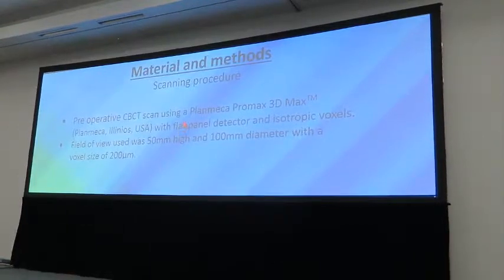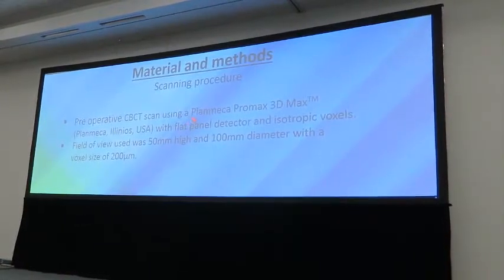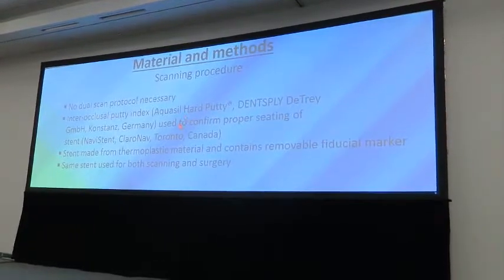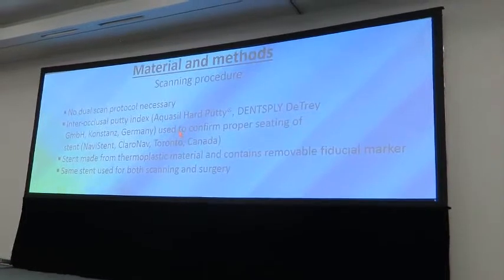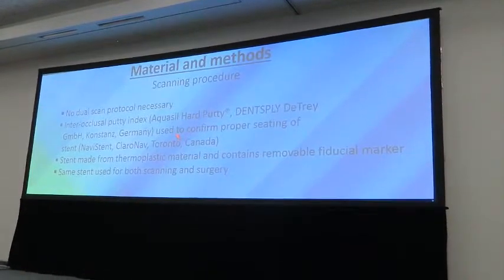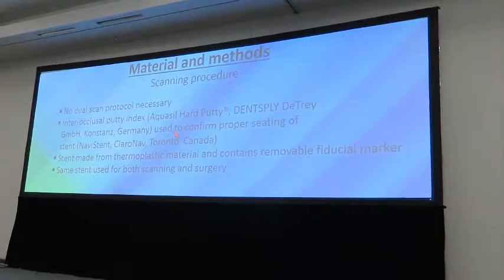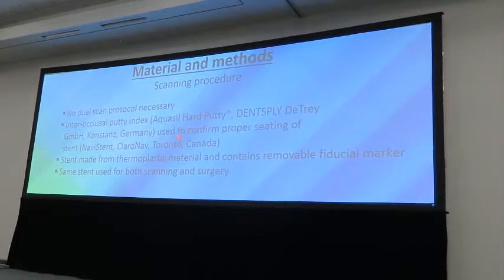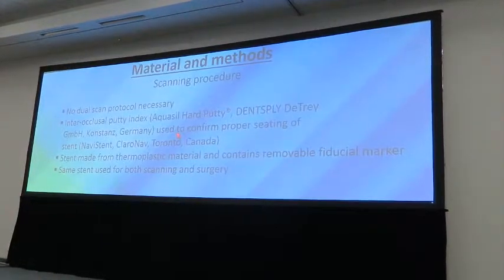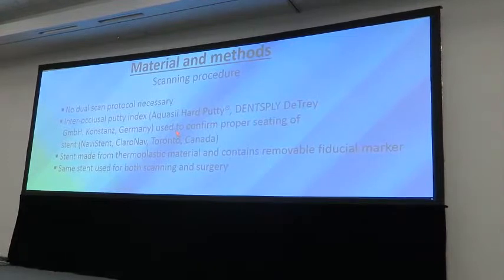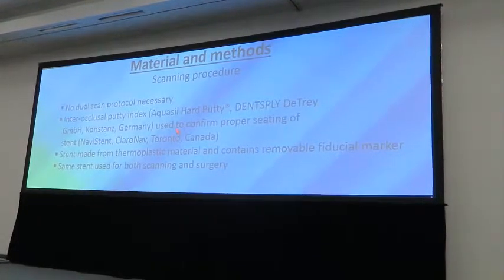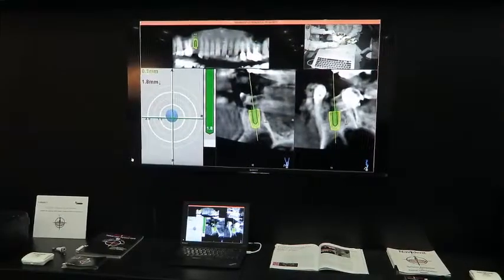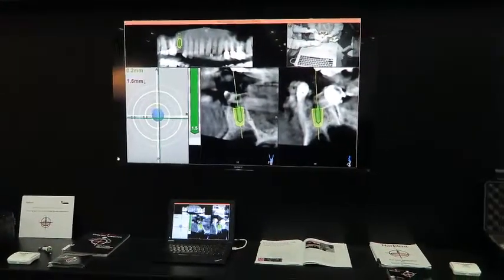Preoperative CBCT scans were made for planning purposes using the AHARA principle. No dual scanning scan protocol is necessary. The patient enters the scanner and is scanned with an intraoral stent as the normal adaptive patient itself. The stent is stabilized in a different position by an intraoral body index during scanning. The stent itself is made from a thermoplastic material that can be molded in the patient's mouth prior to scanning.